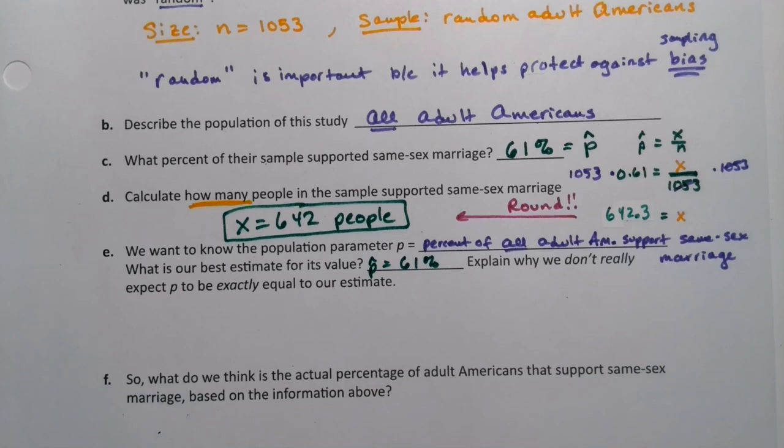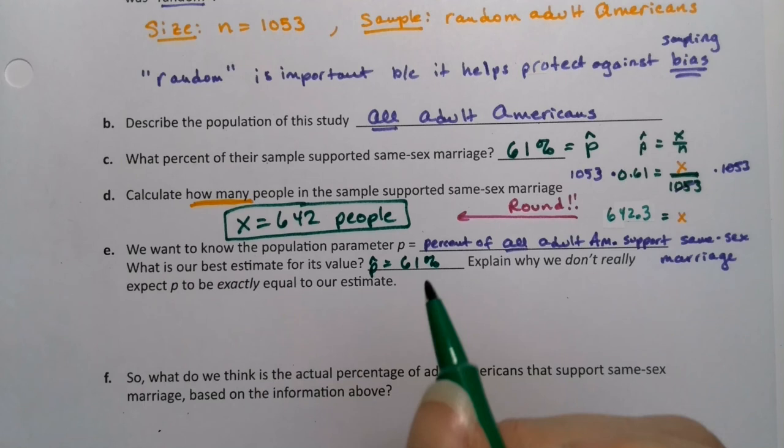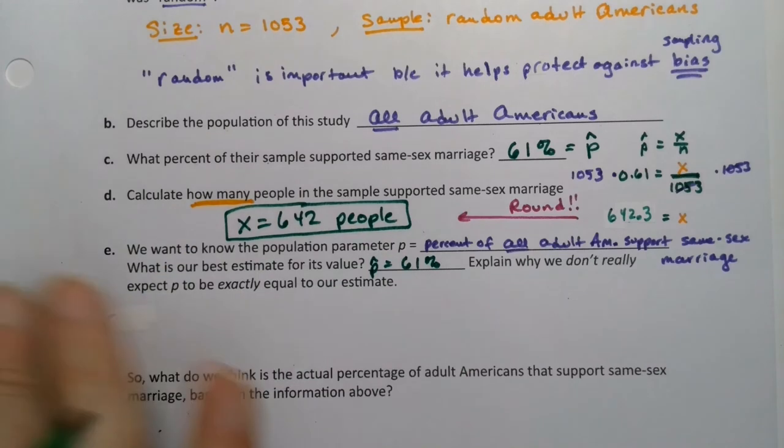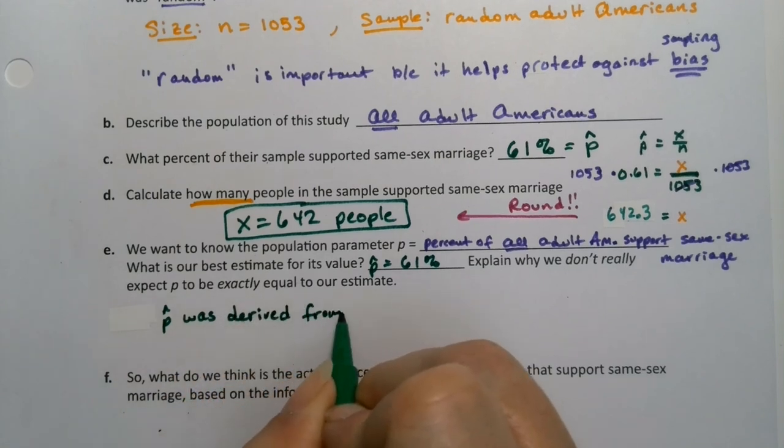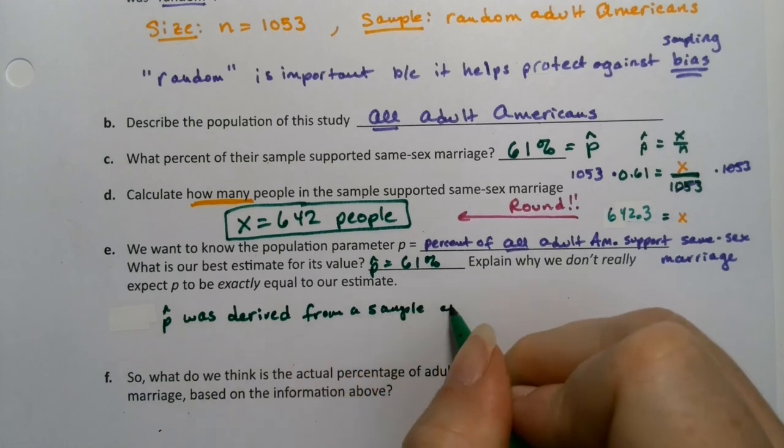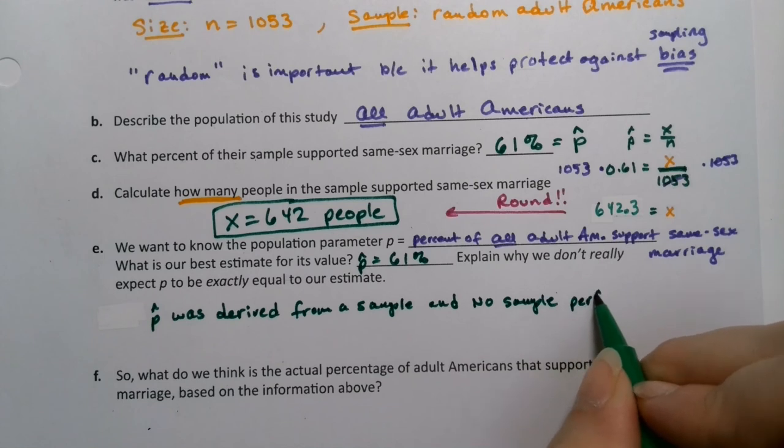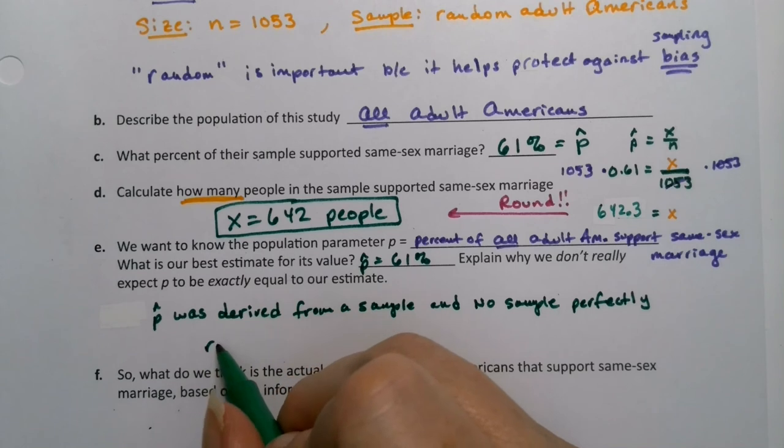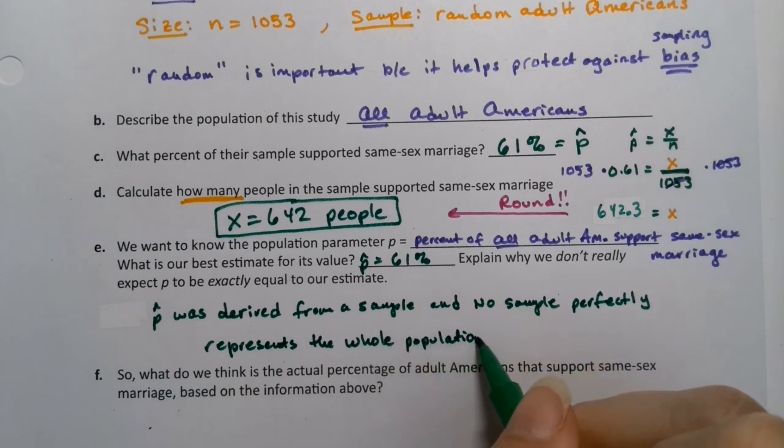But here's the trick. We don't really expect P to be 61%, not exactly. Because every sample would be slightly different, and the 61% came from a sample. No sample perfectly represents the population. P hat was derived from a sample, and no sample perfectly represents the population. That's what sampling error is about.